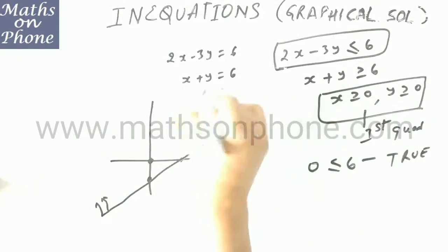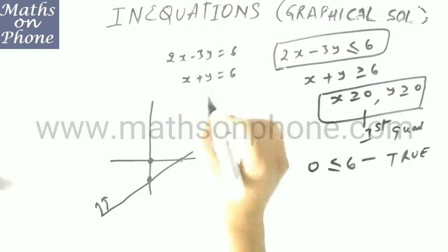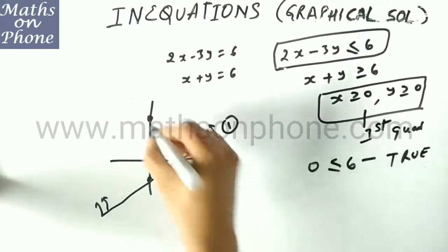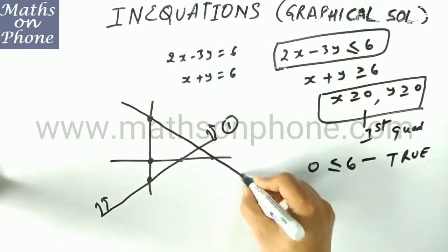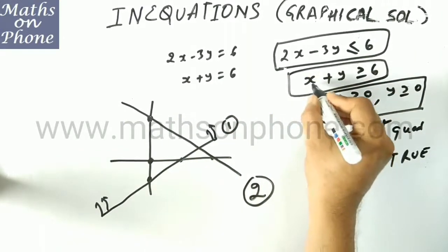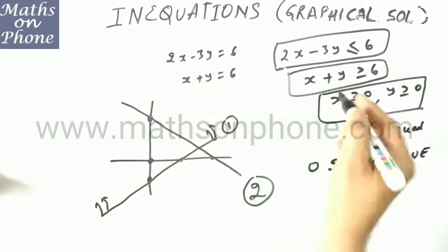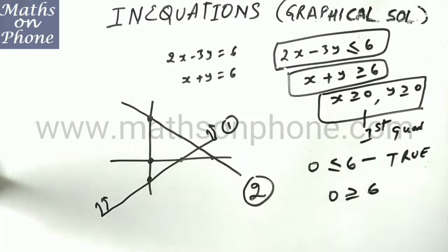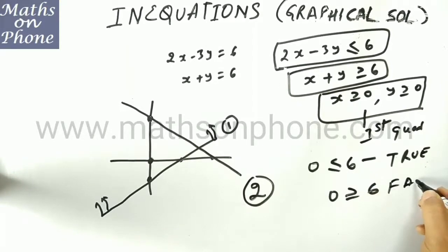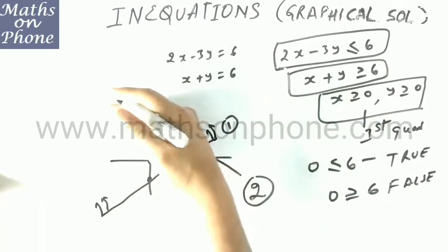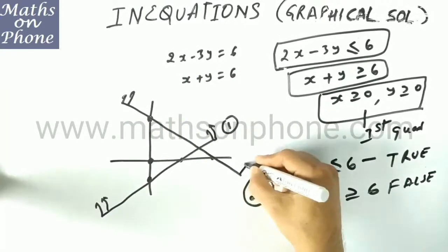Now go for the second equation. For this line: put x equal to 0, y is 6; put y equal to 0, x is 6. Now draw line number 2. Shade the inequation portion. Again, with respect to the origin, either the origin side or non-origin side. Put x equal to 0, y equal to 0: 0 is greater than or equal to 6 — is it true or false? This is false, since 0 is not greater than 6. So we shade the region not containing the origin, which is the region on the far side.